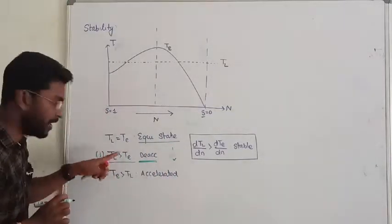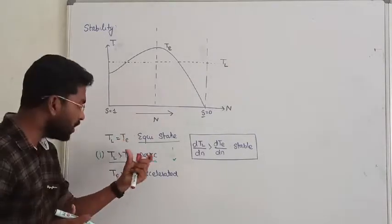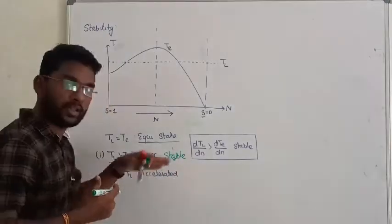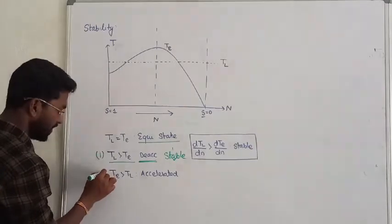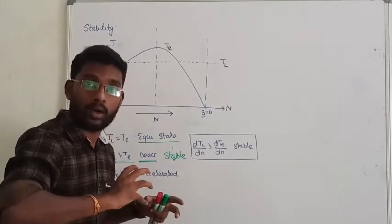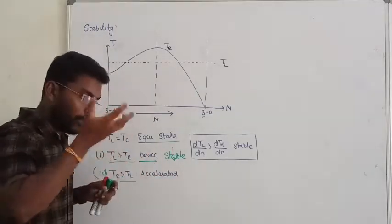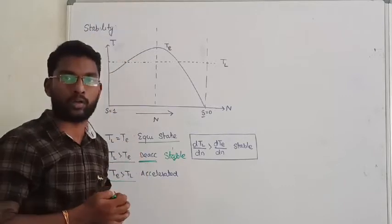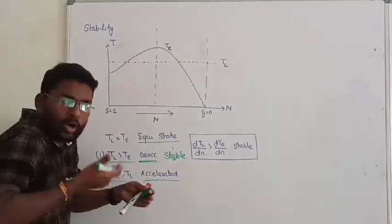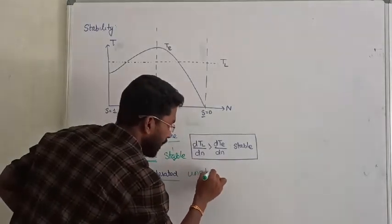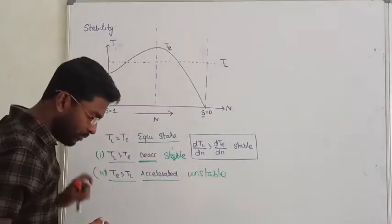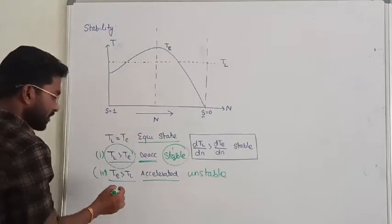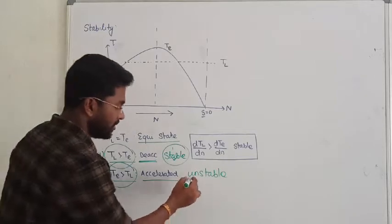Just remember: whenever your load causes the machine to decelerate, in case of that deceleration point, my machine is going to be more and more stable. However, the speed of the machine can also become less stable. If we go to the system of electromagnetic torque with low torque, the system is going to be unstable.